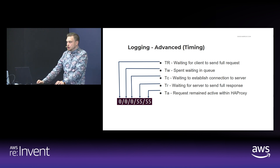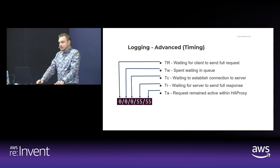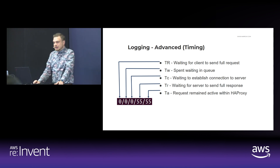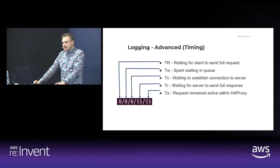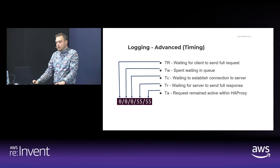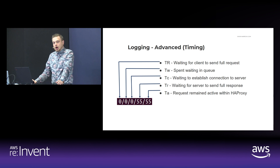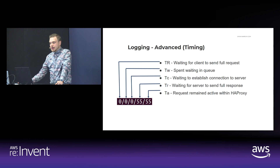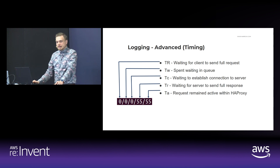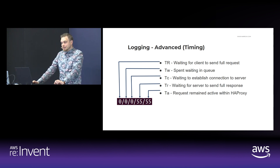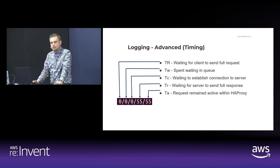We also see how long the request spent waiting in queues for a connection slot, which accounts for the backend queue as well as the server queues. Additionally, we see the total time it took HAProxy to establish the TCP connection to the server — essentially the elapsed time between the moment the proxy sent the connection request and the moment it was acknowledged by the server. And we'll also see how long it took in total for the server to send the response, from the moment the TCP connection was established to the moment the server sent its complete response headers.